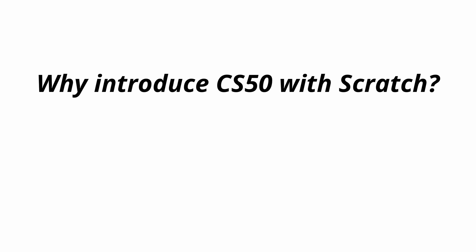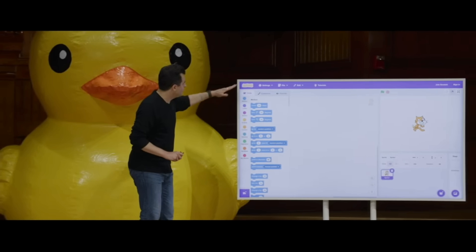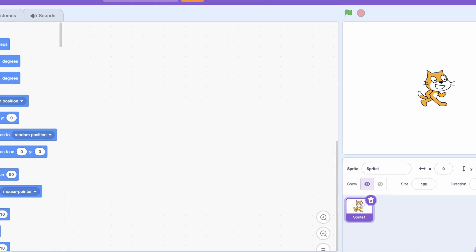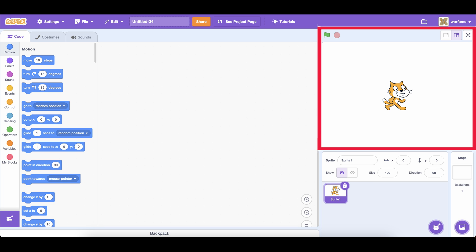Okay, so now we know why Professor Malan introduces his CS50 course with Scratch. Next, he goes on to explain how coding in Scratch actually works by introducing the Scratch editor. There are four different sections of the editor: the blocks, code area, sprites, and project window.